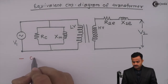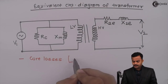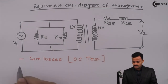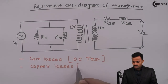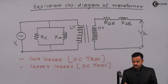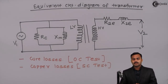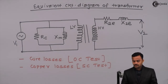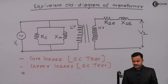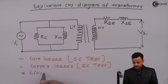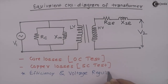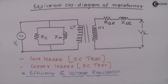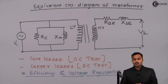Additionally, core losses are obtained through the OC test, and copper losses can also be obtained from the short circuit test. Using these results, we can find transformer specifications — that is, we can obtain the efficiency and voltage regulation of the transformer. Knowing the equivalent circuit diagram of a transformer is very much essential. Thank you.